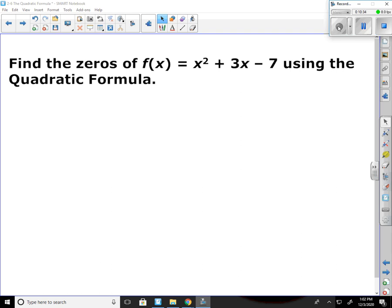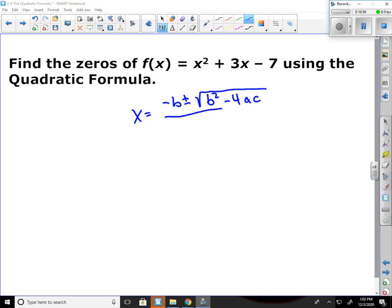Okay. Let's do this one together. Start with my formula. X equals negative b plus or minus square root of b squared minus 4ac all over 2a. Now I'm just plugging my numbers in. X equals negative 3 plus or minus square root of 3 squared minus 4 times 1 times negative 7 all over 2 times 1, which is just 2.